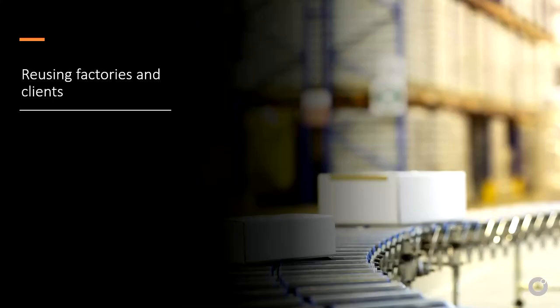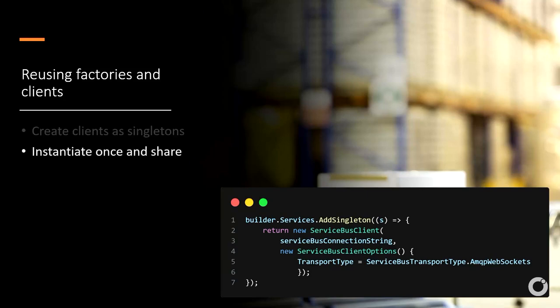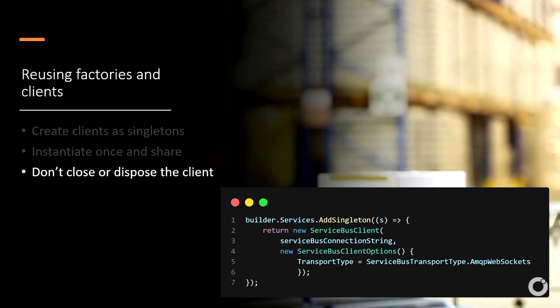Reuse your factories and clients. Create a client as a singleton — initiate it once and share it. Don't close or dispose the client unnecessarily. Closing the client closes the connection, requiring re-establishment; disposing the client closes the link, which is even more expensive because we have to recreate the link on the service side. We worked with a large crypto broker about two months ago who was creating new connections per operation — fixing that raised their throughput by about 50 times.